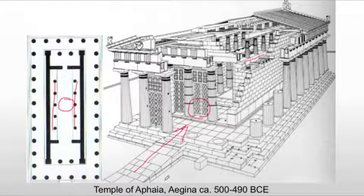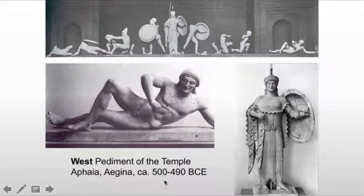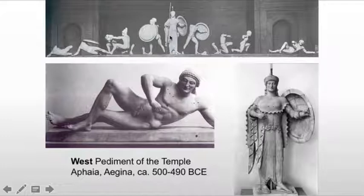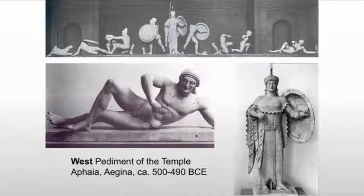Both pediments were filled with life-size statuary. This is the west pediment, and unlike what we saw at the Temple of Artemis, all of the figures are the same size. Instead of making figures smaller as they move down to the edges of the triangle, they change their pose — reclining figures or kneeling figures as we move closer to those edges. What we're seeing is a theme from the Trojan War, with Athena at the center. Athena is a little bit larger than everyone else because of hierarchy of scale, since she's a god — though this idea won't stay around for the Greeks. All the other figures are at the same scale.